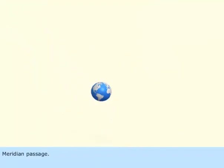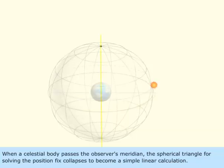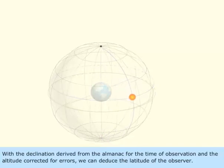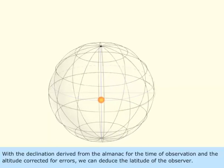Meridian Passage: When a celestial body passes the observer's meridian, the spherical triangle for solving the position fix collapses to become a simple linear calculation. With the declination derived from the almanac for the time of observation and the altitude corrected for errors, we can deduce the latitude of the observer.